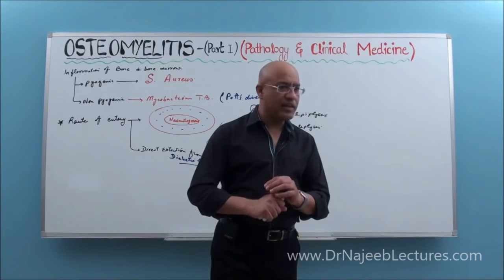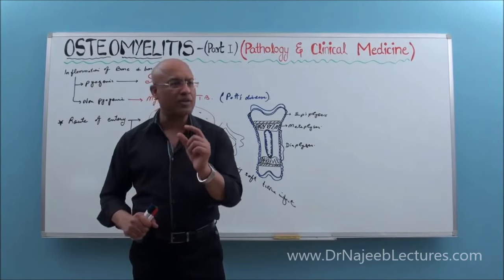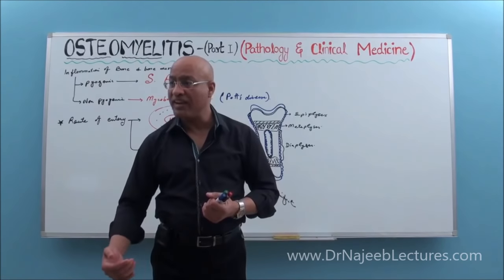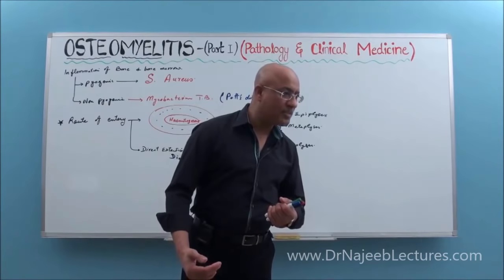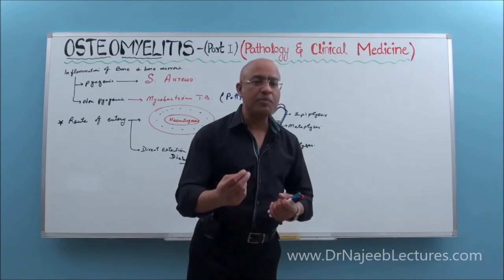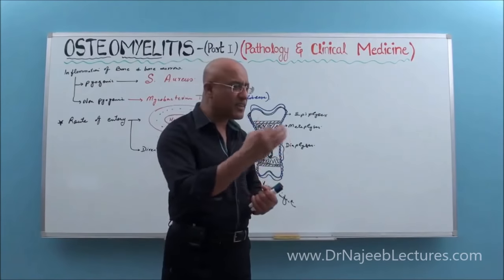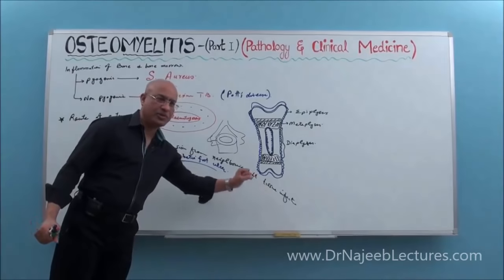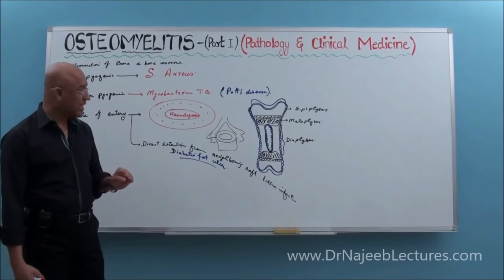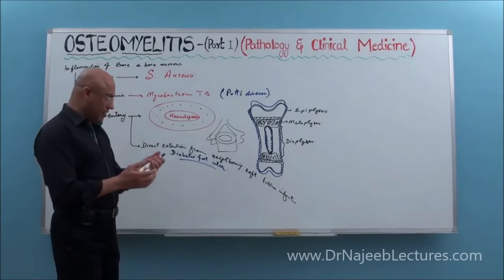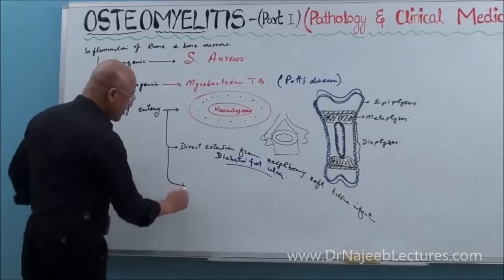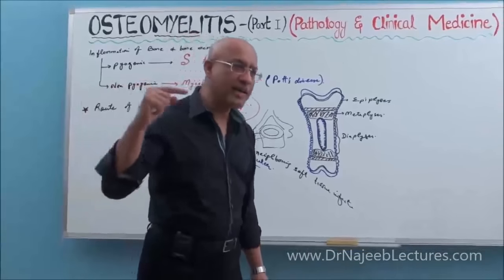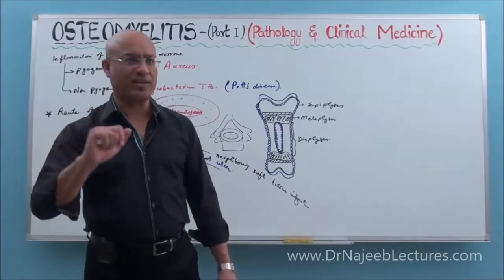In diabetic foot, repeated injury and infection lead to ulceration — a necrotic part of the skin sloughs off. When there is a foot ulcer, microbes enter it, and if the ulcer becomes deep, microbes can reach the bones of the foot and produce osteomyelitis. This is a classical example of osteomyelitis by direct extension from neighboring soft tissue infection. Such osteomyelitis is also seen in other ischemic limbs.